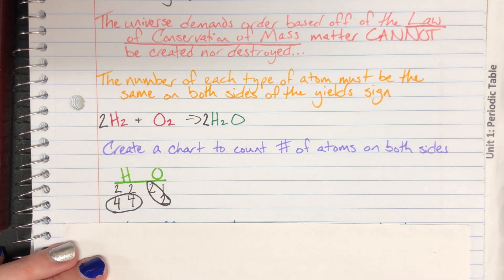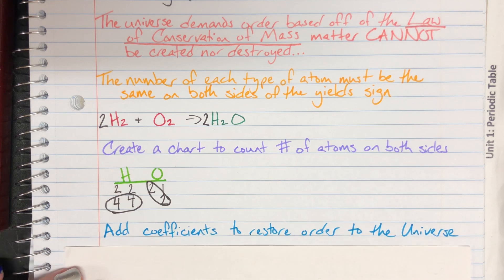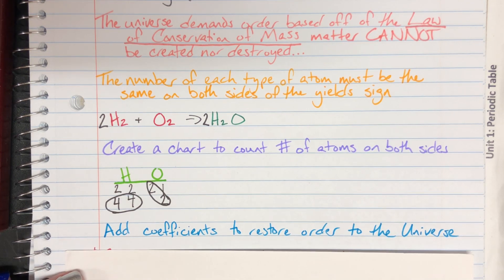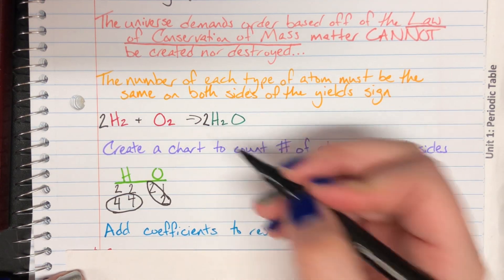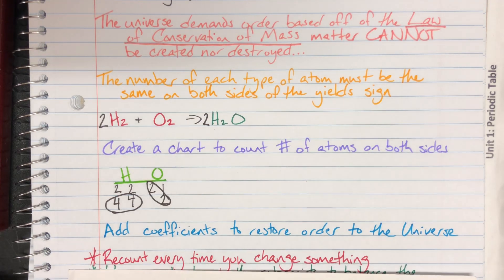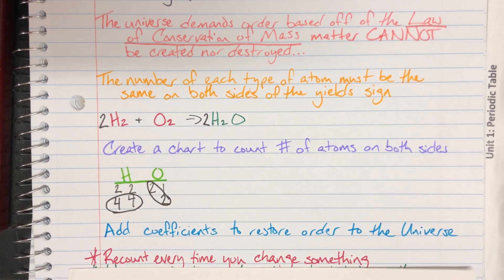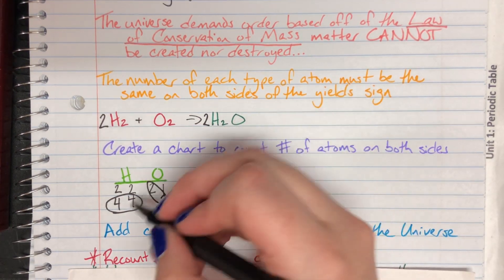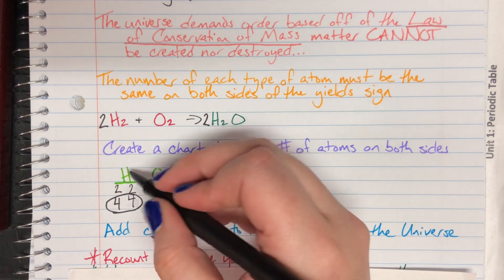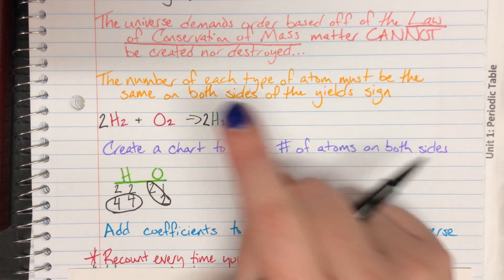I have balanced this equation and brought order back to the universe. We're adding coefficients to restore order. Coefficients are these large numbers here; these small numbers are called subscripts. We have to recount every single time we change something. Just because I added this two and it fixed oxygen, if I hadn't recounted, I would have messed myself up because I wouldn't have realized I also messed with my hydrogen. Recounting is very important.